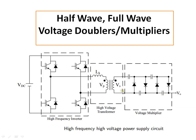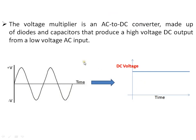This consists of a high frequency inverter, basically an H-bridge, which converts the low voltage DC to an AC waveform. This AC is further stepped up using a transformer, and this high voltage AC is converted to high voltage DC by using this voltage multiplier. The voltage multiplier is basically an AC to DC converter that converts low voltage AC to high voltage DC.